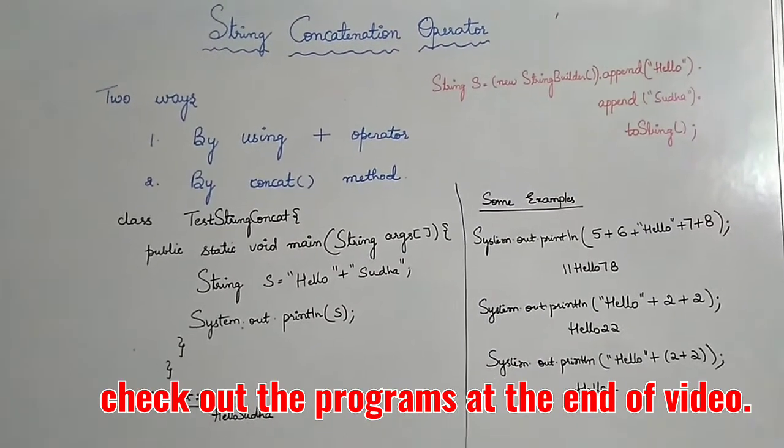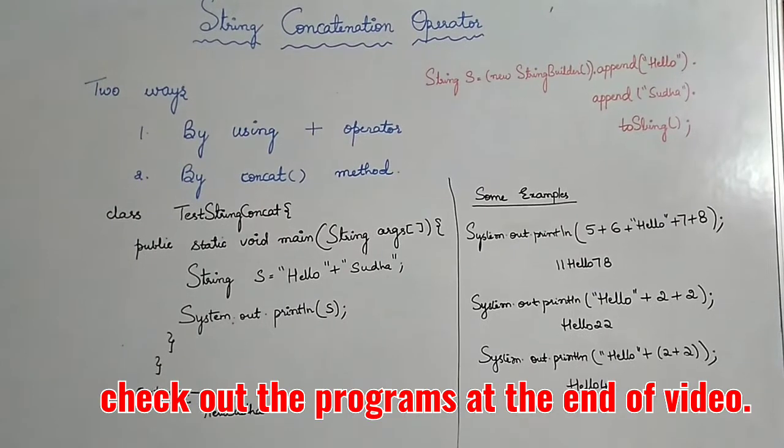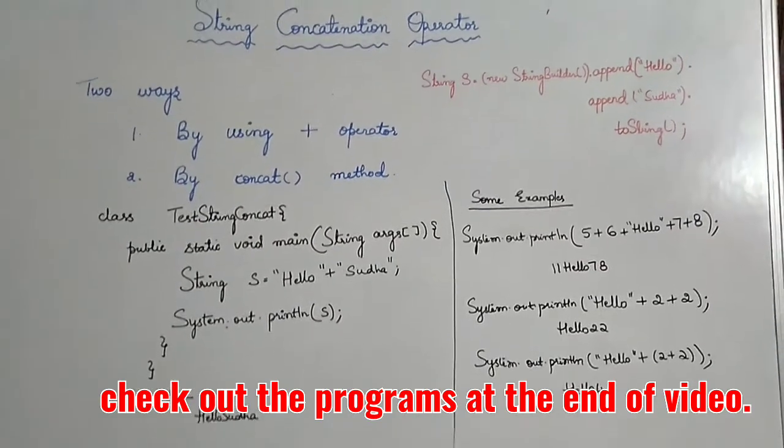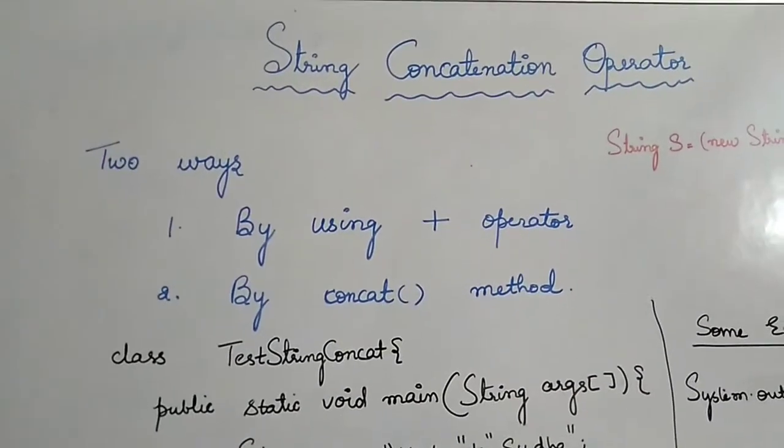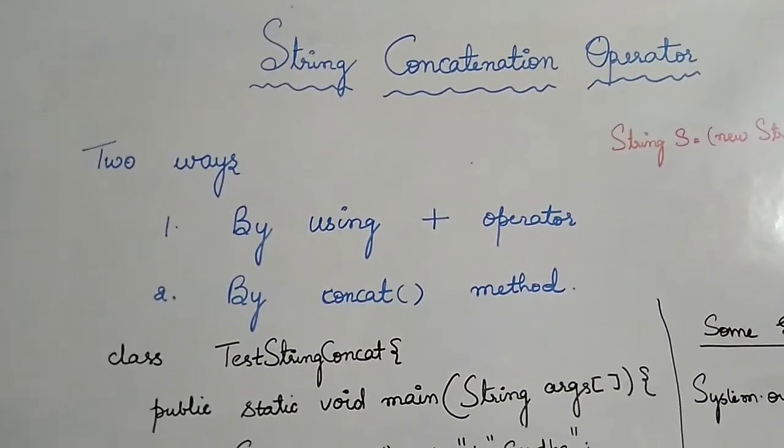What is meant by concatenation? Concatenation means joining two strings together. There are two ways to join strings: one is by using plus operator and the second one is by using concat method.